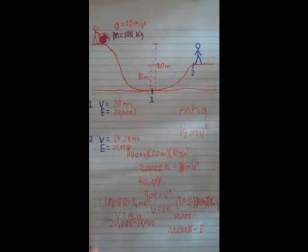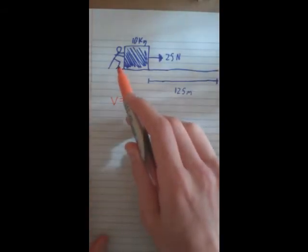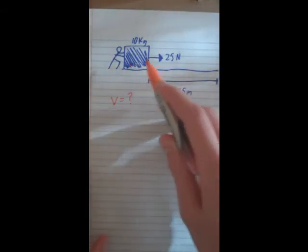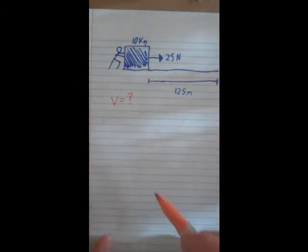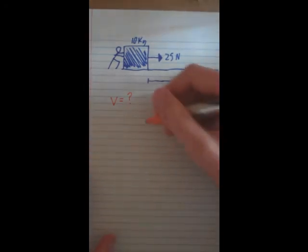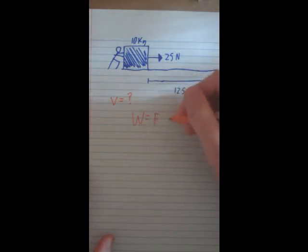Okay, so let's go on to the next one. So here what we have is a person pushing this block on an icy surface for 125 meters, and we have to figure out the velocity after he stops pushing it. So, work equals force times distance.